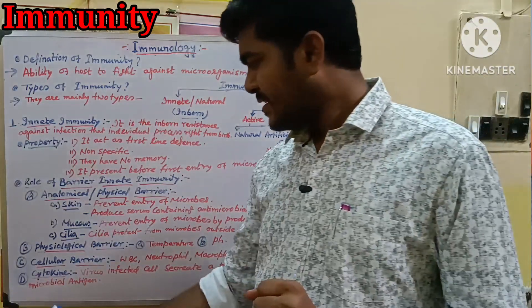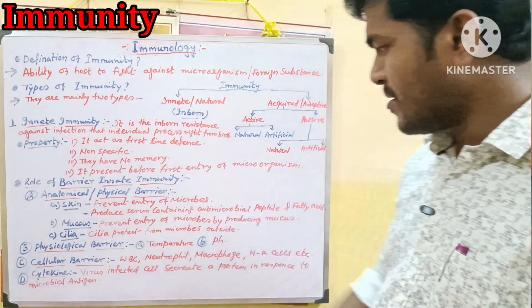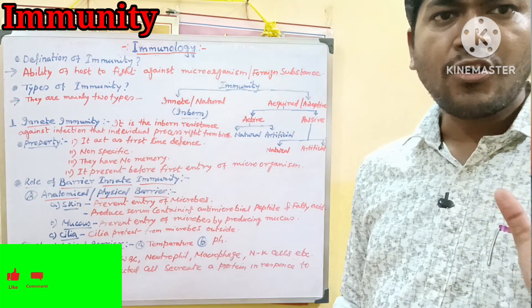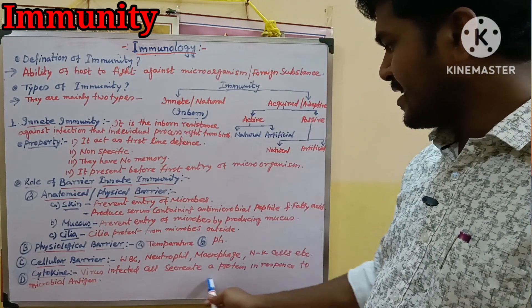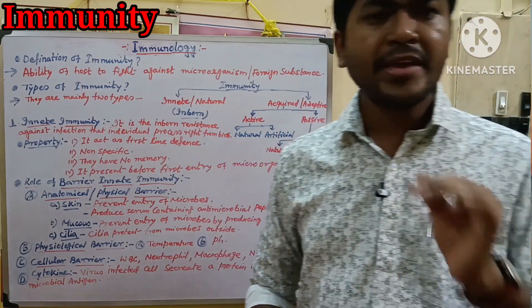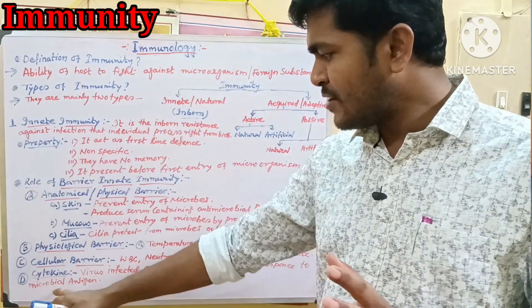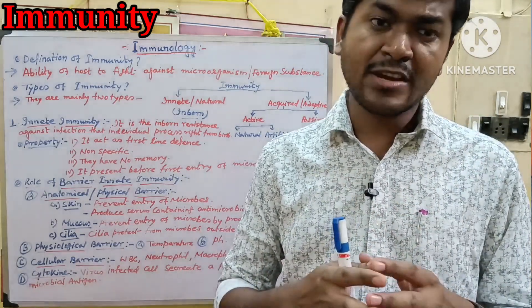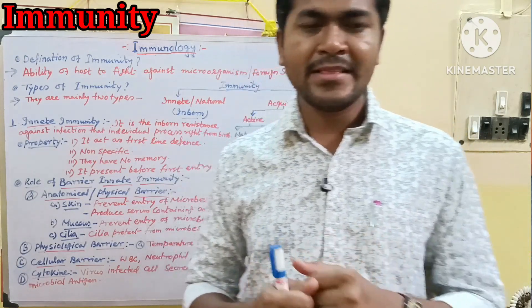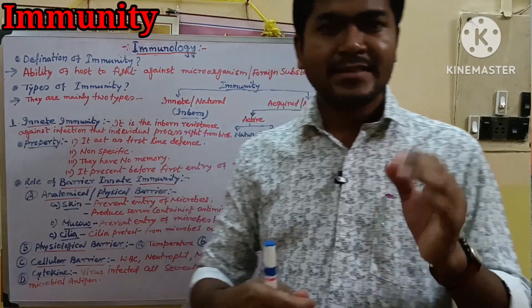Cytokines are proteins produced by virus-affected cells in response to microbial antigens. When a virus affects a cell, it produces and secretes proteins — this is an interferon-based response. Cytokines act against foreign substances. This leads us to adaptive immunity and its classification.